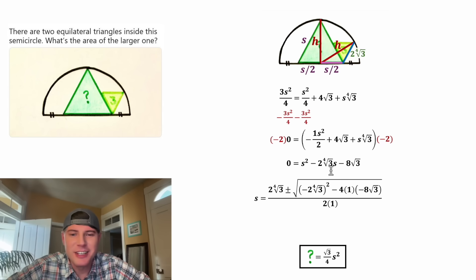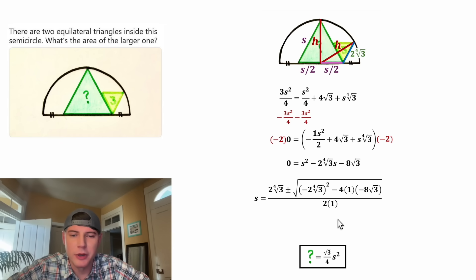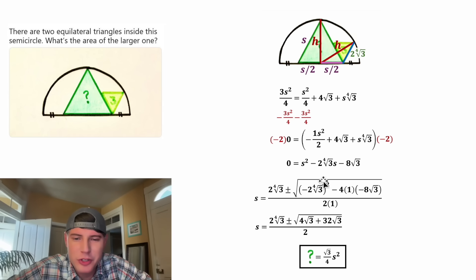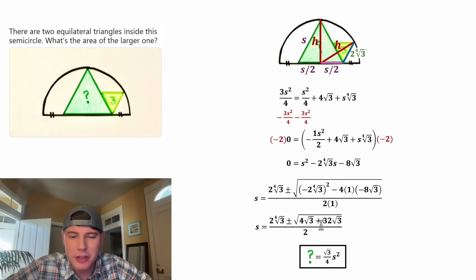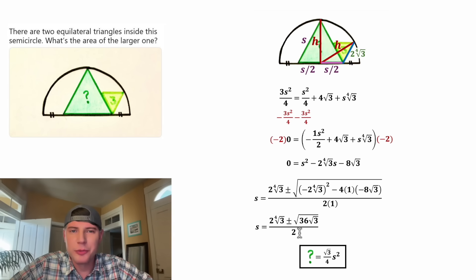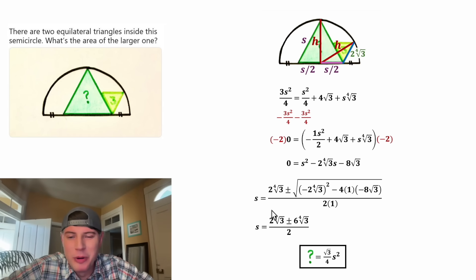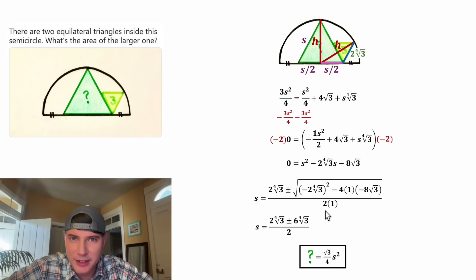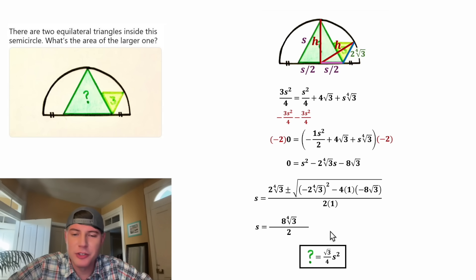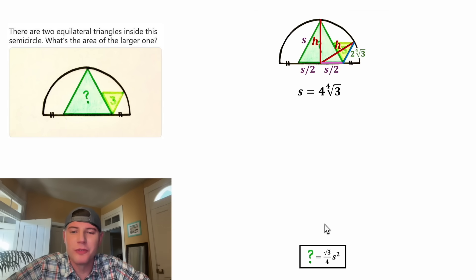Rearranging into standard quadratic form — S squared term, S term, constant term — we're ready for the quadratic formula: S equals negative B plus or minus the square root of B squared minus 4AC, all over 2A. Simplifying inside the square root: negative 2 squared is 4, and the fourth root of 3 squared is root 3. Then 4 times 1 times 8 root 3 is 32 root 3, and 4 root 3 plus 32 root 3 is 36 root 3. The square root of 36 is 6 and the square root of root 3 is the fourth root of 3. Since S must be positive, we take the plus sign, giving 2 plus 6 equals 8 of these, divided by 2 equals 4. So S equals 4 times the fourth root of 3.